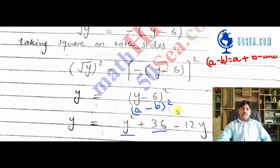So y² plus 6² is 36, minus 2 times a is y and b is 6. So this is 6 into 2 is 12, giving us minus 12y. This is minus 2ab, so minus 12y.